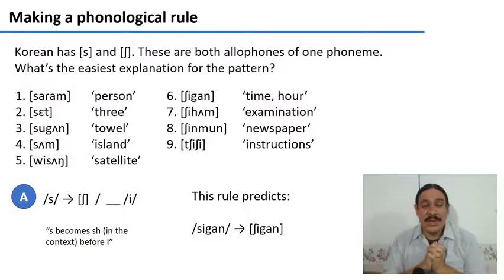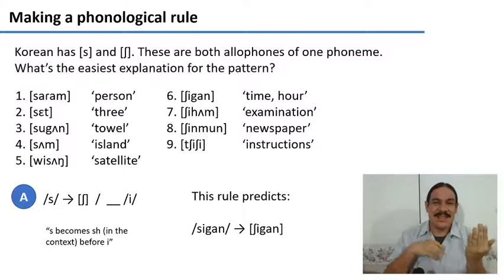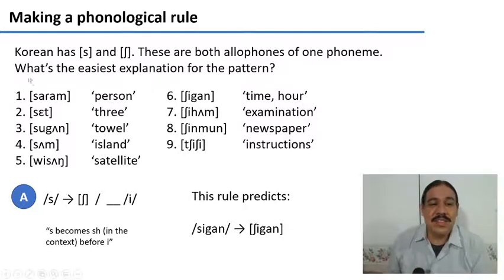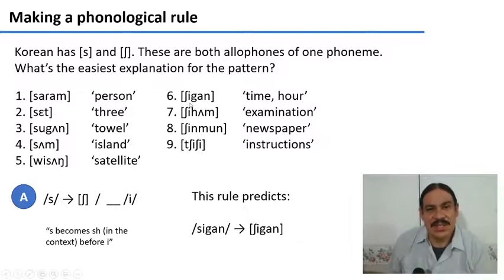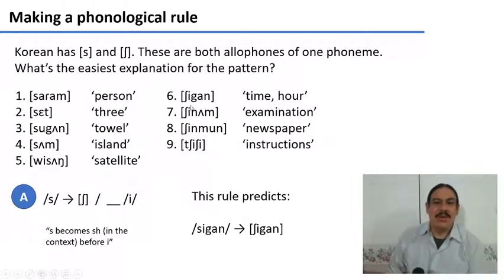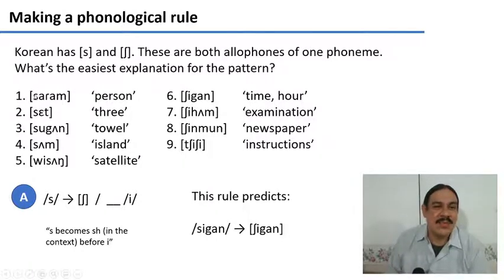This is an example from earlier in the week. We had some data from Korean, and we knew that Korean has two sounds, S and Esh. In some words we see only the S, as in Saram, Set, Sugun, Wiesong. And there are other words where we see the Esh, as in Shigan, Shiham, Shinmun. But we only see the Esh whenever it is followed by the sound E, and we only see the S whenever it is not followed by the sound E.